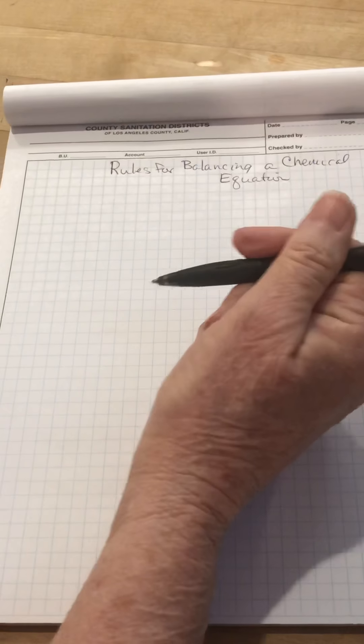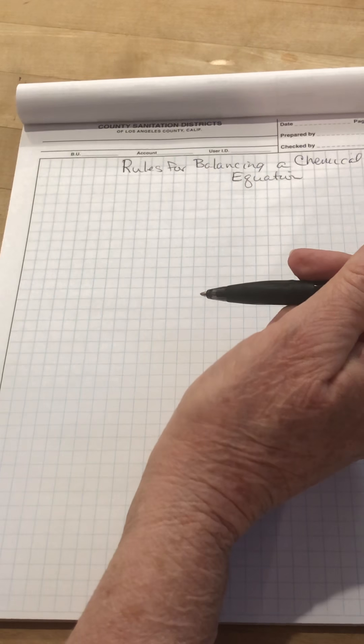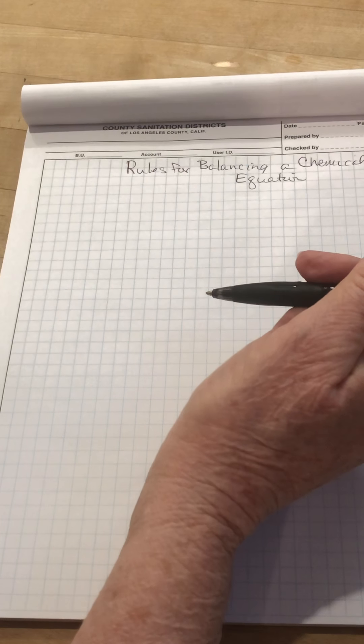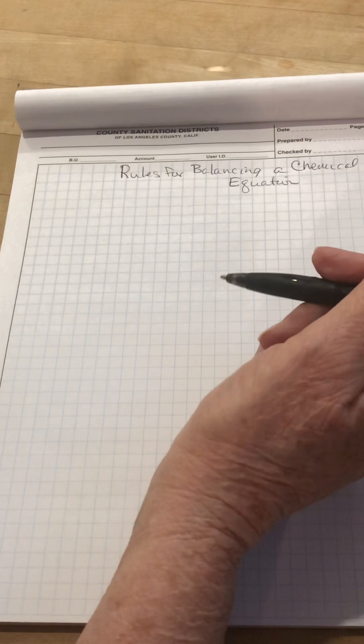But there are six steps you need to go through in about the same fashion every time or your equations won't balance. It's still going to be a trial and error method, but if you follow these steps it will help.